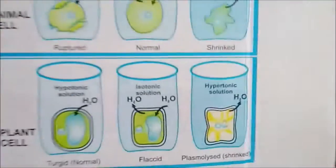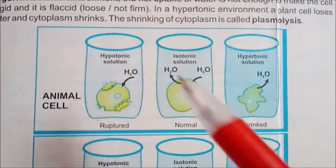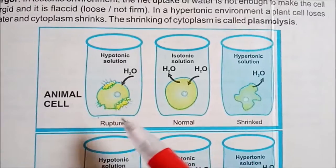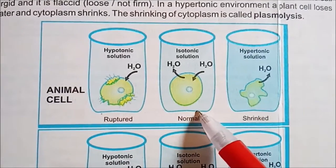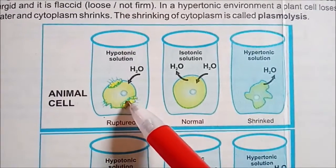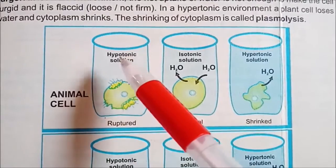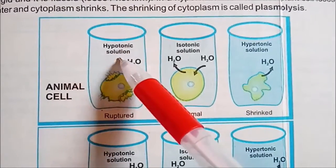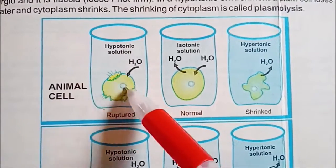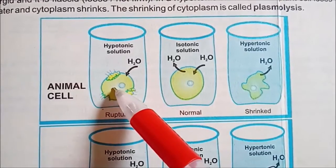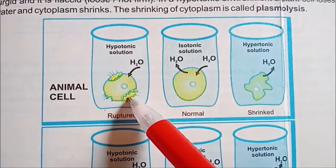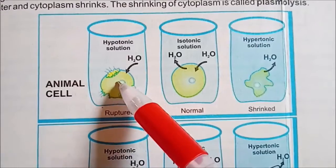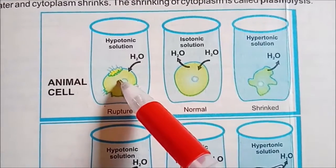If you want to see this figure, page number 71 — figure for animal cells. You can see that there is only cell membrane, there is no cell wall. So animal cells, if you put them into hypotonic solution, water from the hypotonic solution will move into the cell. The cell will swell and finally the pressure will build up — the cell will break. The cell will be destroyed.